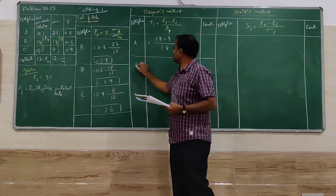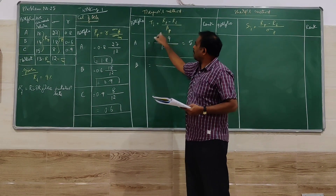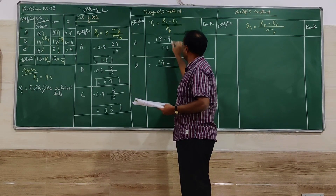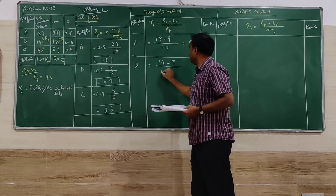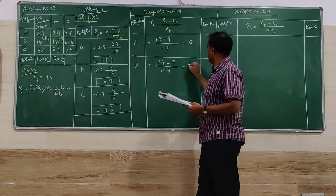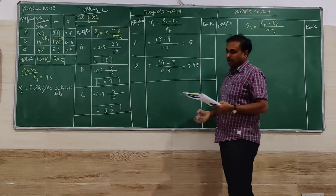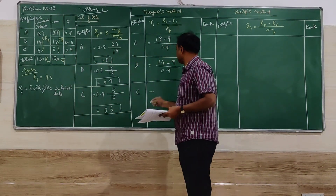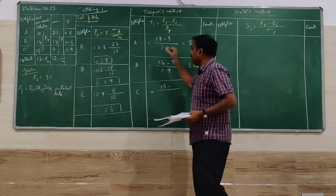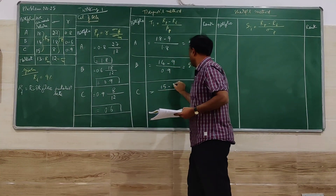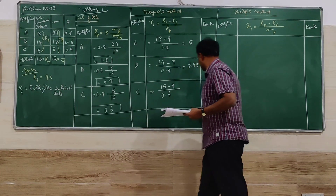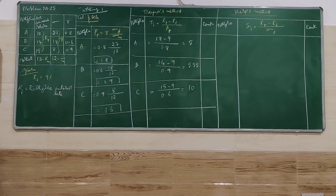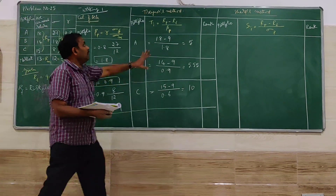For portfolio B: RP is 14, RF is 9, and beta is 0.9, giving a Treynor value of 5.55. For portfolio C: RP is 15, RF is 9, and beta is 0.6, giving a Treynor value of 10.